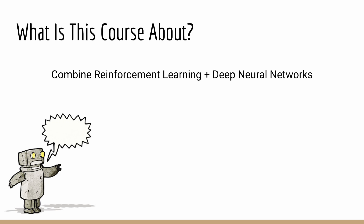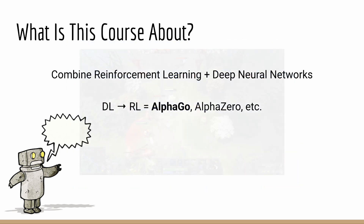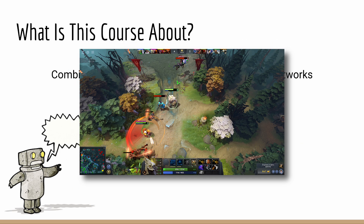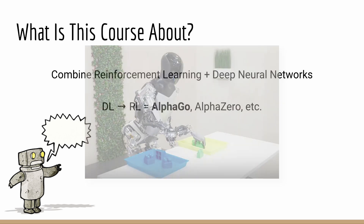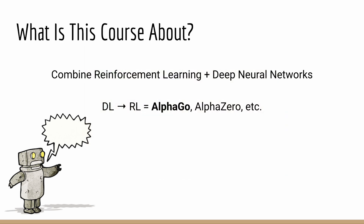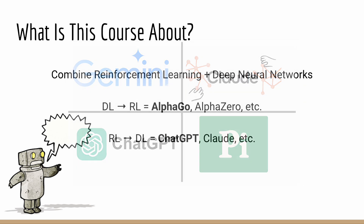And the benefits go in both directions. Deep learning has made reinforcement learning much more powerful, allowing it to beat world champion Go and chess players, achieve superhuman performance in video games, and even control robots in the physical world. Conversely, reinforcement learning has made deep neural networks much more powerful. The latest LLM technologies, like ChatGPT, Claude, and Gemini, use a technique known as reinforcement learning from human feedback to train these AIs to be our helpful assistants.